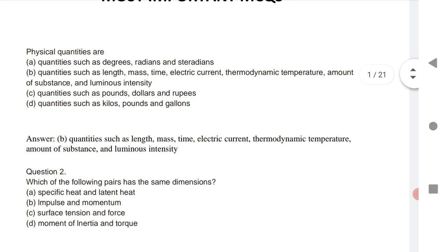The first one is physical quantities are. We know that physical quantities are length, mass, time, electric current, thermodynamic temperature, amount of substance and luminous intensity. Sometimes they will ask you from the following, select the physical quantities.